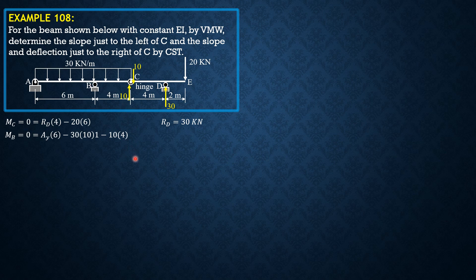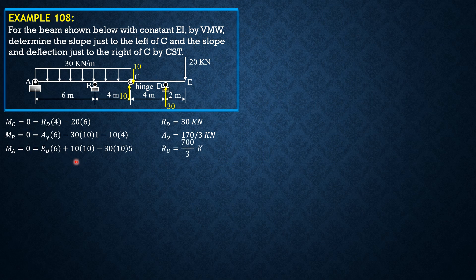Then minus 10 times 4, so A_y equals 170/3 kilonewtons. For summation of moments about A equals zero: R_B times 6 plus 10 times 10 minus 30 times 10 times 5 equals zero, giving R_B equals 700/3 kilonewtons. Let's apply them as shown and select our sectioning points x.